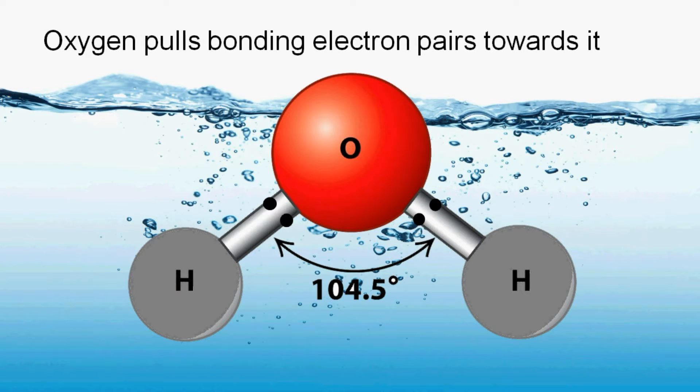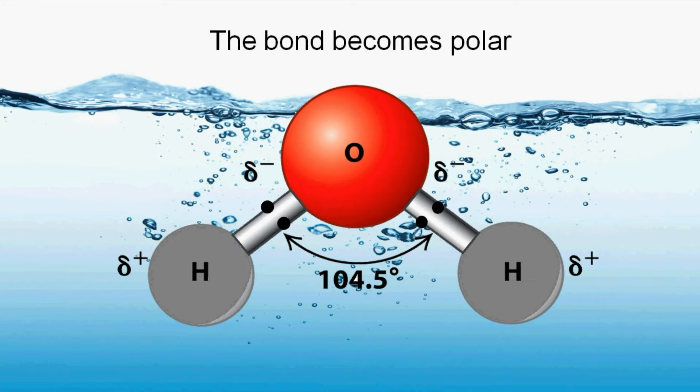That's why the oxygen end becomes negative. As the electron is moving away from the hydrogen, that end becomes positive. That's why water molecule is a polar molecule - it has positive and negative ends.